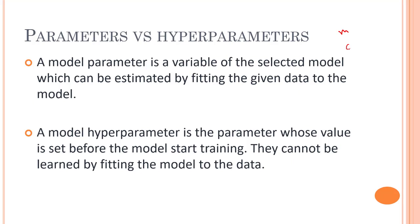When we go to neural networks, we will look into the number of layers, the number of neurons per layer, and the number of clusters in the k-means clustering algorithm — all of these are hyperparameters that we can manually set. They are required for estimating the model parameters, whereas parameters are required for making predictions. Parameters are estimated by optimization algorithms like gradient descent or the Adam optimizer, while hyperparameters are manually tuned.